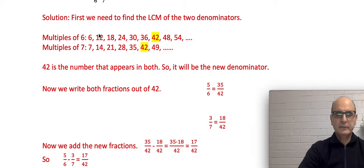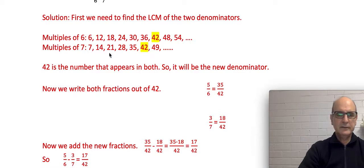Let's write the multiples of 6. Multiples of 6 are numbers starting with 6, and each next number is found by adding 6 to the previous one. So: 6, 12, 18, 24 — we start from 6 and keep adding 6 to get the set of multiples of 6.